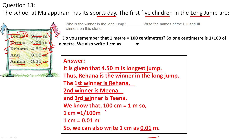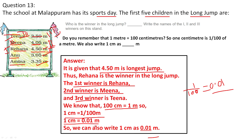We know that 100 centimetres equals 1 metre. So 1 centimetre can be written as 1/100 metre. In decimal, moving the point 2 places to the left: 1/100 = 0.01. So 1 centimetre = 0.01 metre. Thank you.